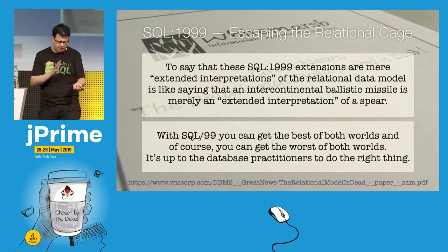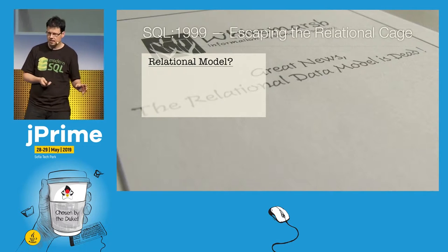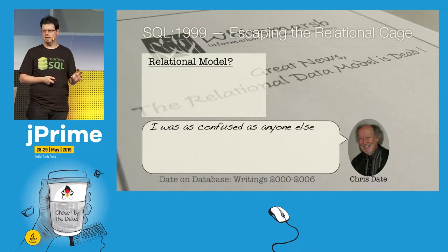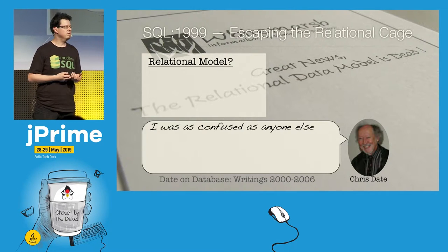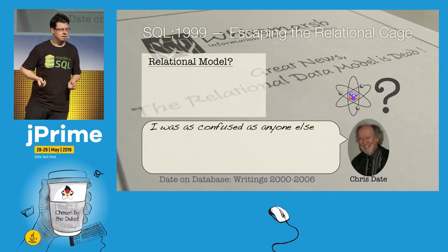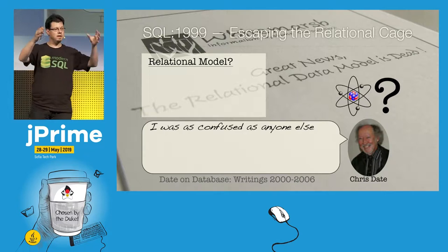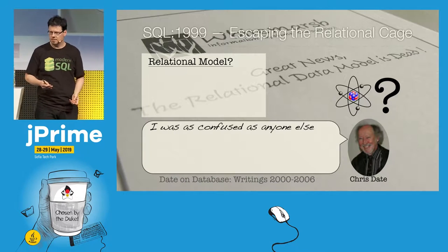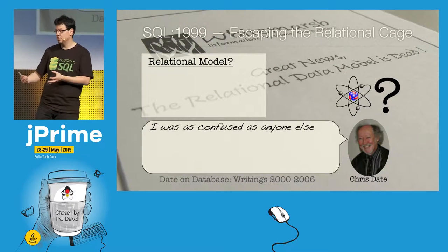What fundamentally changed? On the relational data model side, I'd like to quote Chris Date, who wrote 'I was as confused as anyone else.' He was confused about the atom — what is that thing we're supposed to put into table cells? People said a character string is an atom, but 'atom' means 'cannot be split,' and you can split a string into its characters. The only true atom of information is the bit, and clearly it wasn't meant that we can only put a single bit in each cell.